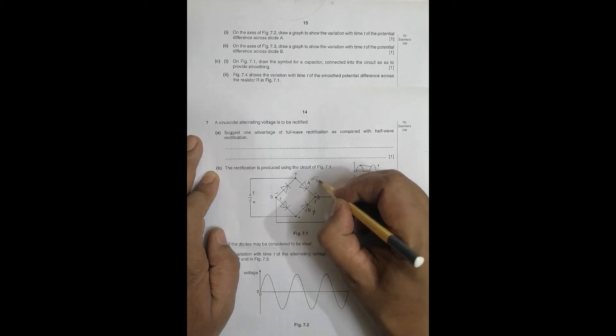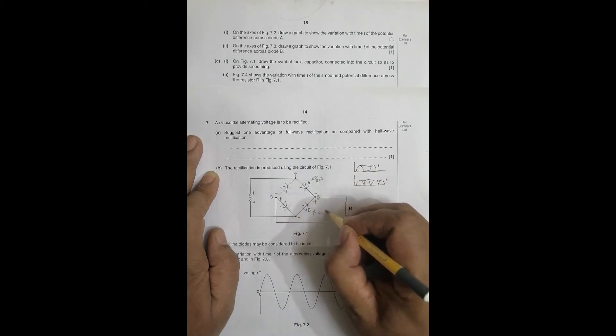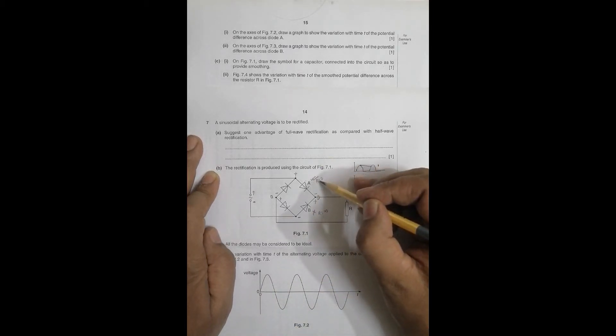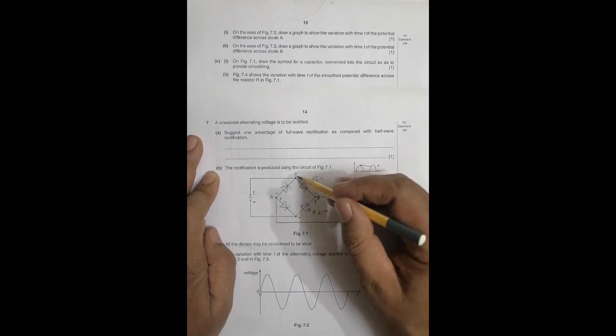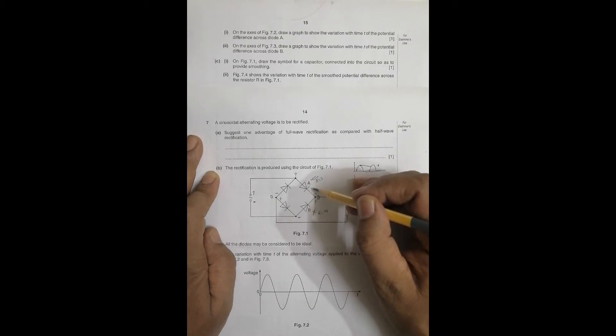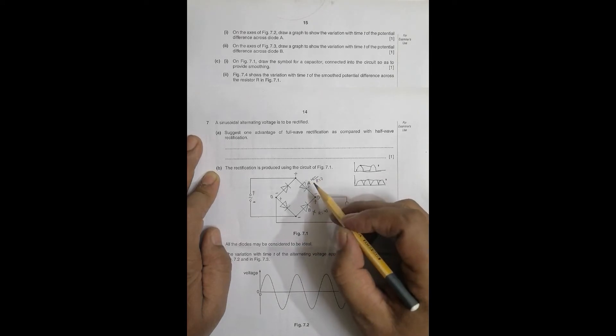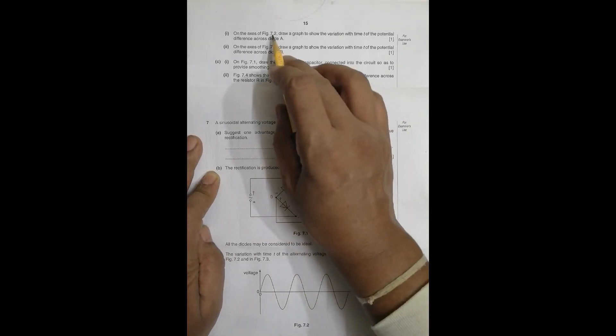When diode A conducts (R = 0), there is no potential difference across it, so the PD across diode A equals zero for this half-cycle. On figure 7.2, the graph for diode A is drawn as zero — flat along the time axis for the positive half-cycle.